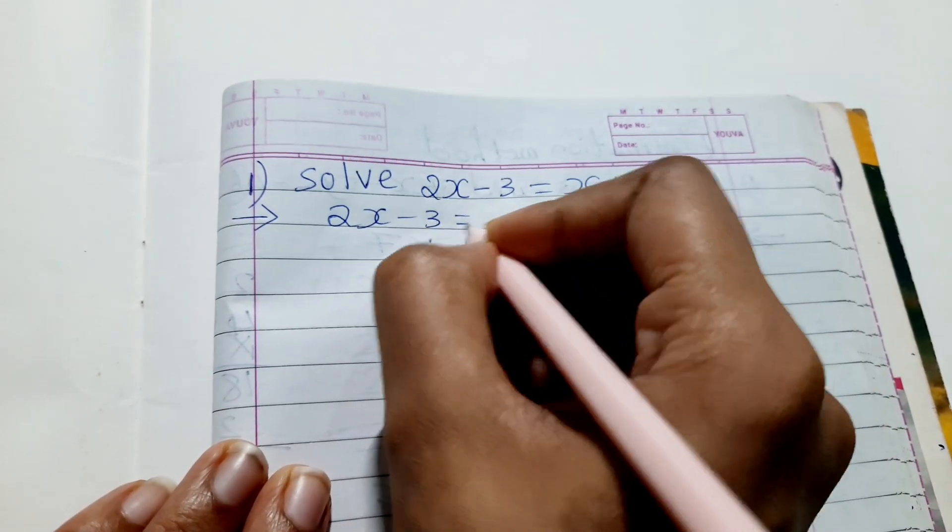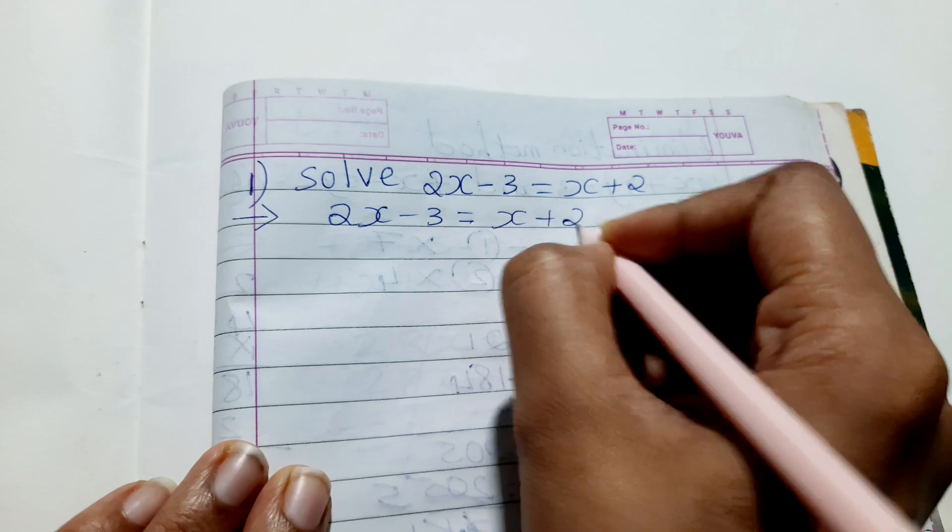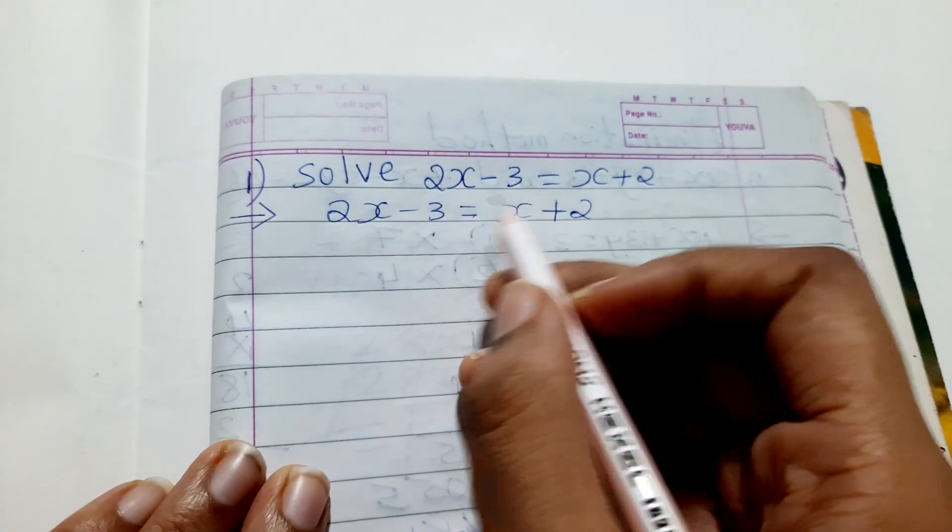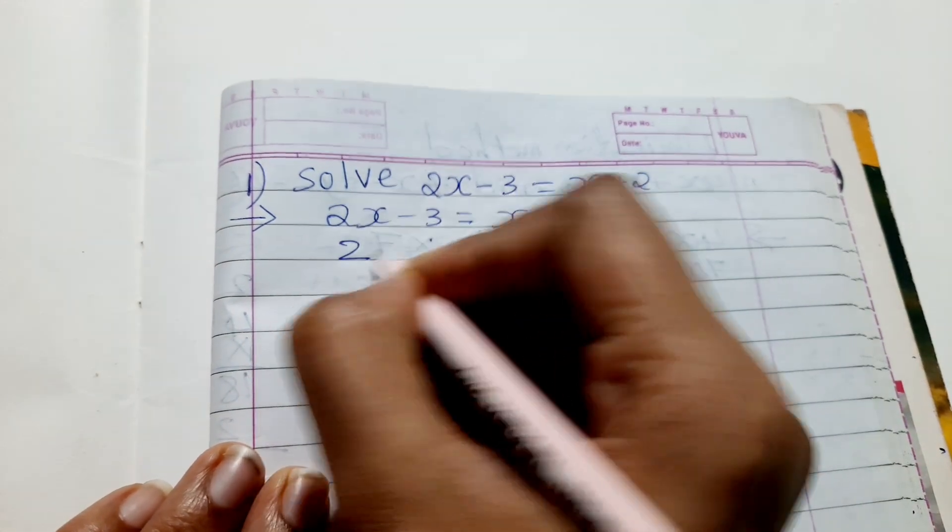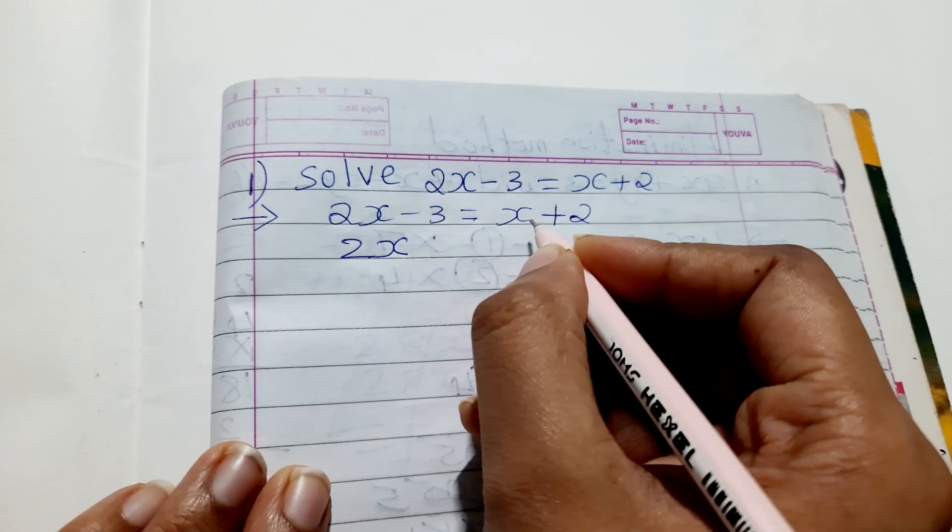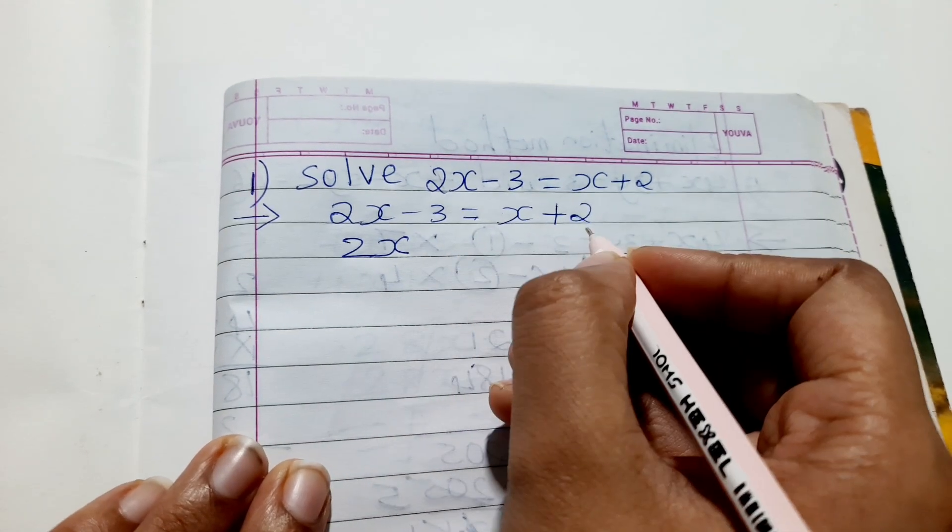2x minus 3 equals x plus 2. In this given equation, we need to find the value of x. So what you will have to do is bring the variable together and constant terms together.